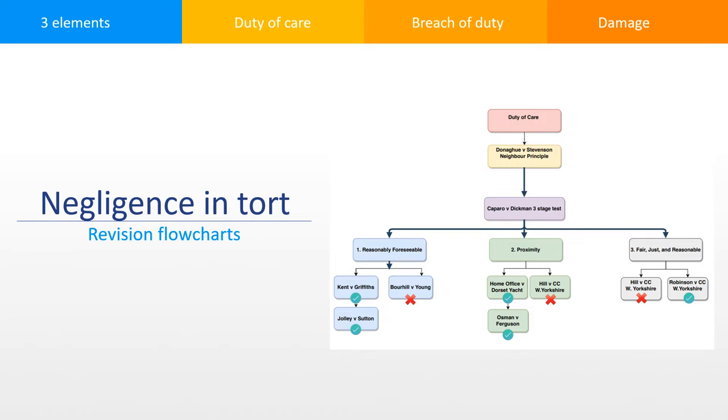In this particular video, we're going to be taking a look at some revision flow charts which show the three key elements that you need to prove in order to be successful in a claim of negligence: duty of care, breach of duty, and damage.